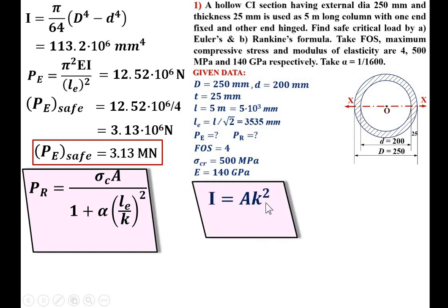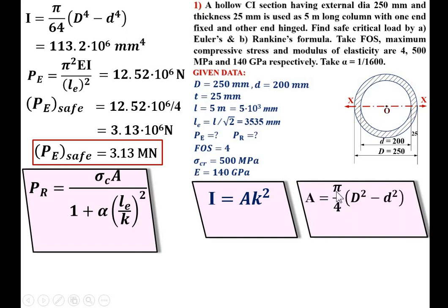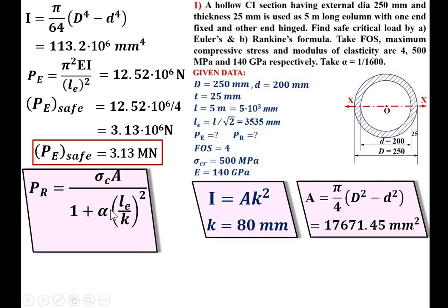Using I = AK², we can find K once we know A. The area of the hollow circular section is A = (π/4)(D² − d²). Substituting D and d gives A = 17671.45 mm². Then from I = AK²: K = √(113.2 × 10⁶ / 17671.45) = 80 mm.